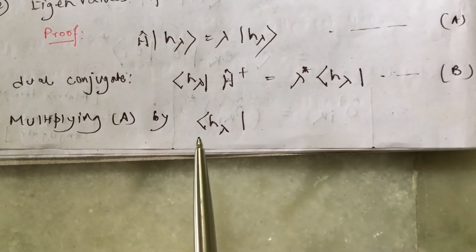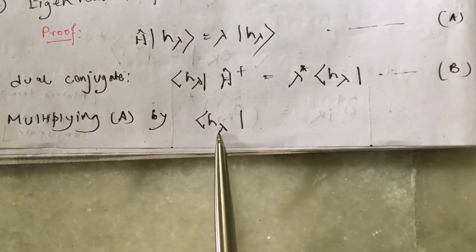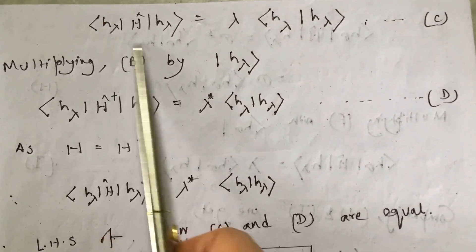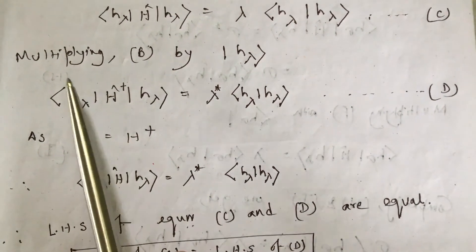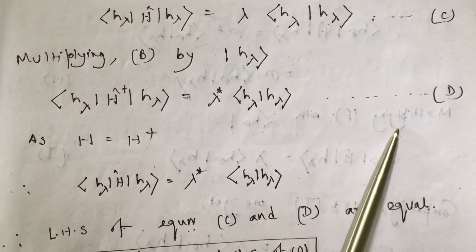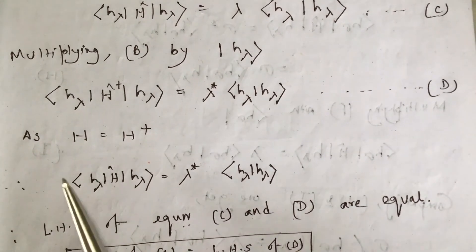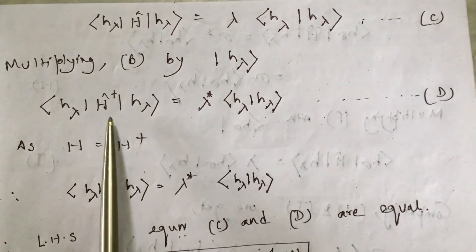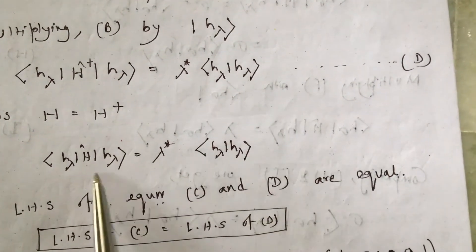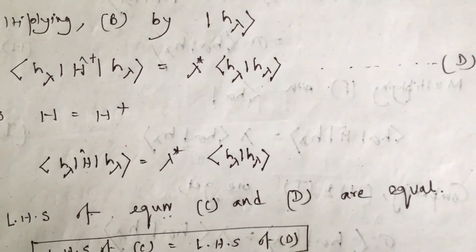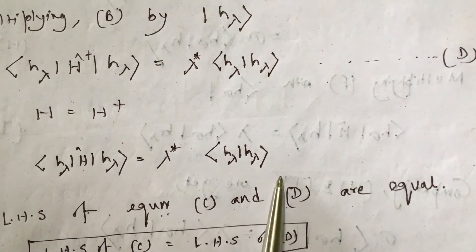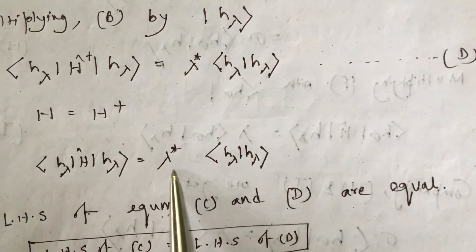Multiplying equation A with bra ⟨H_λ| from the left gives equation C. Multiplying equation B with ket |H_λ⟩ from the right gives equation D. Since H equals H dagger, I can write H in place of H dagger in equation D. So equation D now has H in place of H dagger, with the rest unchanged.